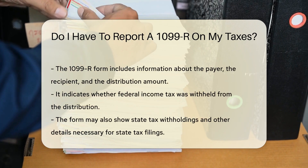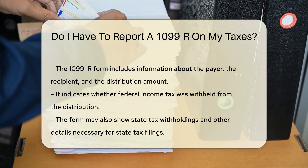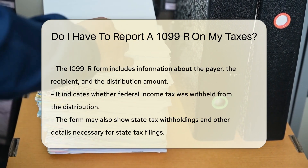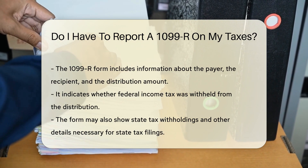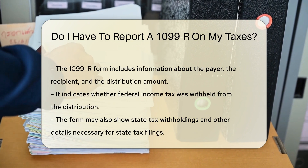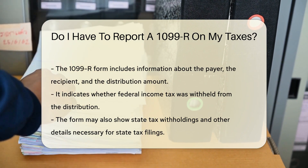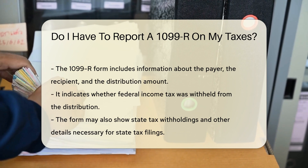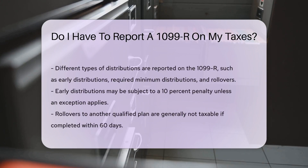The 1099-R form includes information about the payer, the recipient, and the distribution amount. It also indicates whether federal income tax was withheld from the distribution. This information is crucial for accurate tax reporting. The form may also show state tax withholdings and other details necessary for state tax filings.